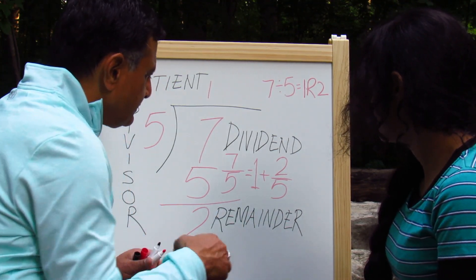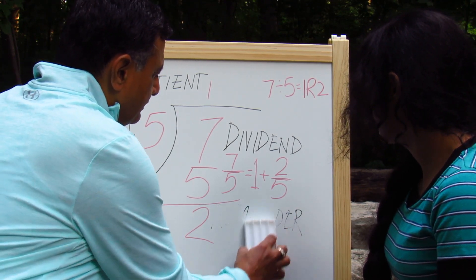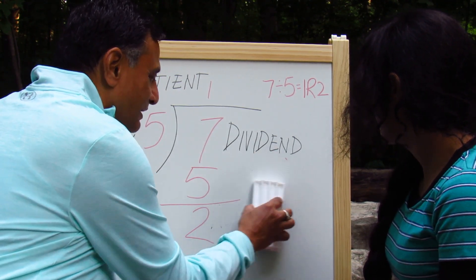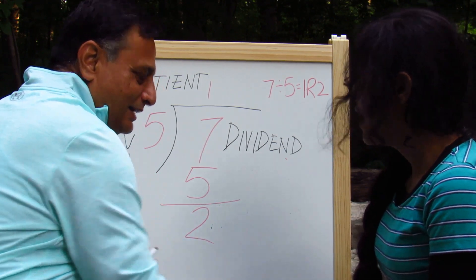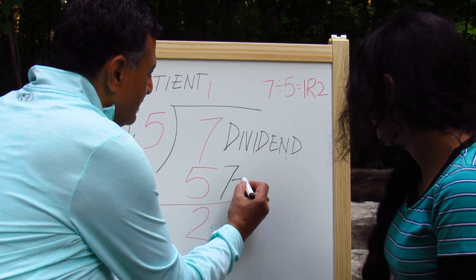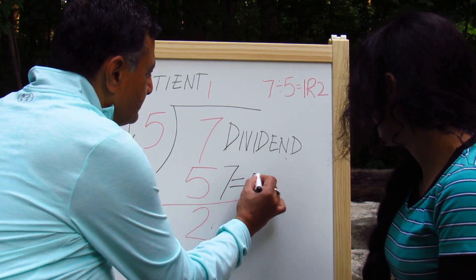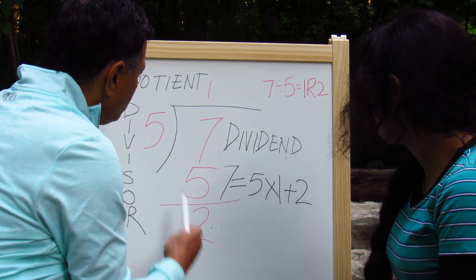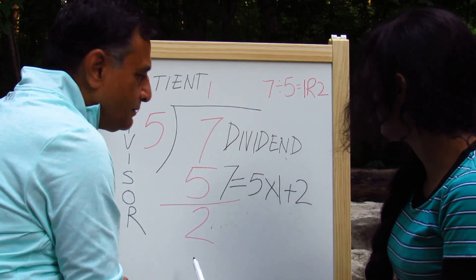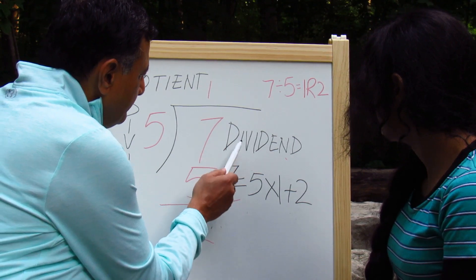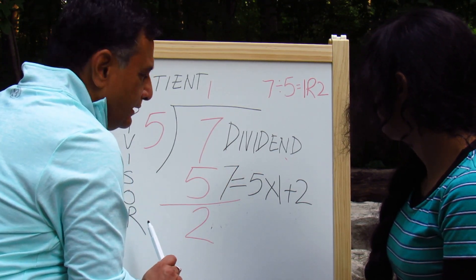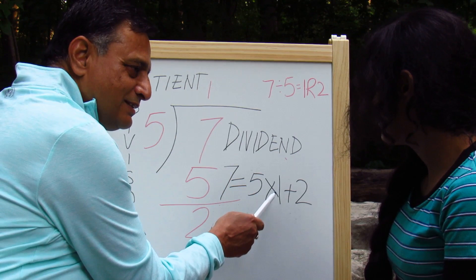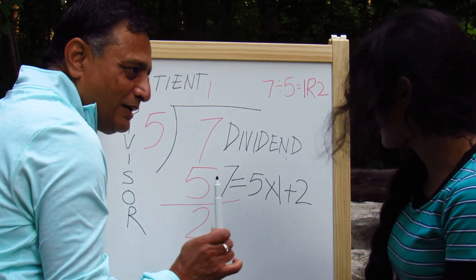So we could also write this in a different form. Let me erase this and then write it in a different form and show you how else we can write this division as a multiplication statement. Since you know, multiplication and division go hand in hand. So you could also say that 7 is equal to 5 times 1 plus 2. So basically, the dividend or the number you are interested in dividing is equal to product of divisor times quotient plus remainder.